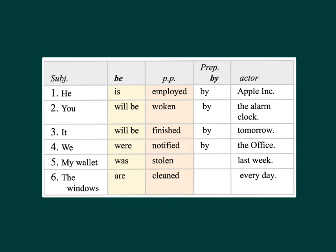Number four: we were notified by the office — it is simple past tense. Number five: my wallet was stolen last week — it is simple past tense. Number six: the windows are cleaned every day — it is simple present tense. Notice that if there is an agent, such as the Apple Incorporation or the office, it is introduced with the word by.